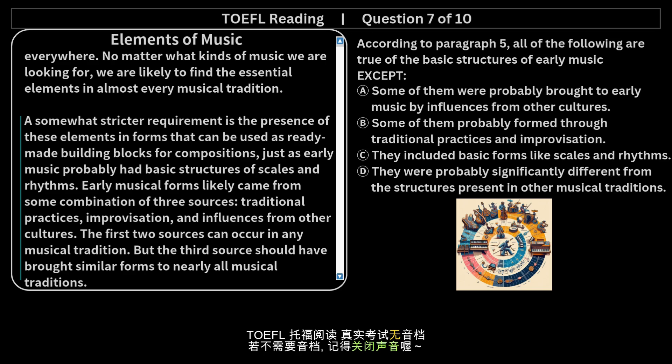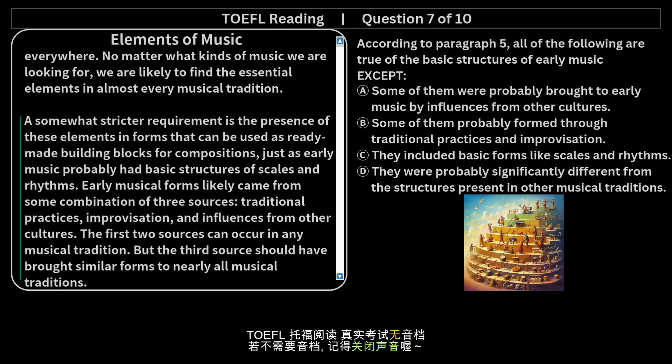A somewhat stricter requirement is the presence of these elements in forms that can be used as ready-made building blocks for compositions, just as early music probably had basic structures of scales and rhythms. Early musical forms likely came from some combination of three sources: traditional practices, improvisation, and influences from other cultures. The first two sources can occur in any musical tradition, but the third source should have brought similar forms to nearly all musical traditions.